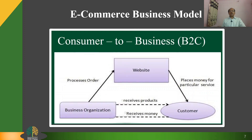Consumer to Business, C to B: in this model, a consumer approaches a website showing multiple business organizations for a particular service. The consumer places an estimate of the amount they want to spend for a particular service. For example, comparing the interest rates of personal loans or car loans provided by various financial institutions via a website. The business organization that fulfills the consumer's requirement within the specified budget approaches the customer and provides services.